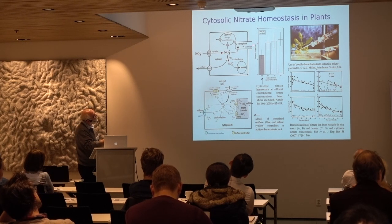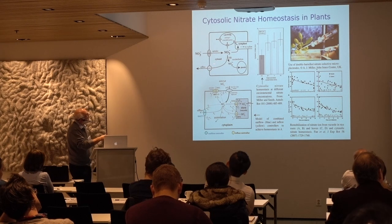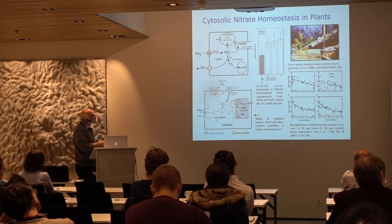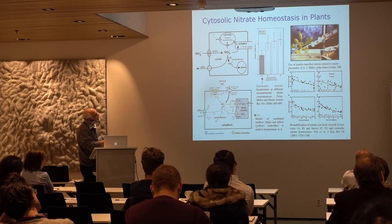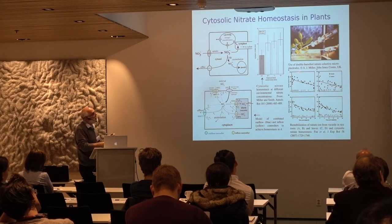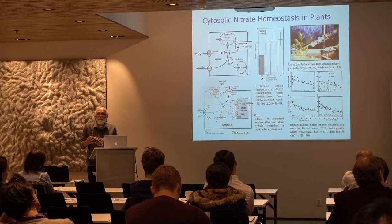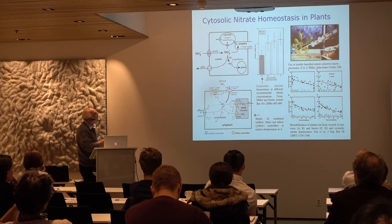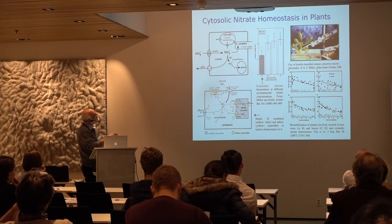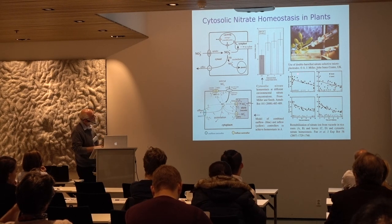Nitrate is also moved to other parts of the plant by the symplast and is also subject to efflux. The experimental results leading to understanding nitrate homeostasis in plants come from the group of Tony Miller at the John Innes Centre. They use double-barreled microelectrodes specific to nitrate and pH, allowing them to measure nitrate levels in specific locations — either in the vacuole or in the cytosol, since the pH in the vacuole is much more acidic.